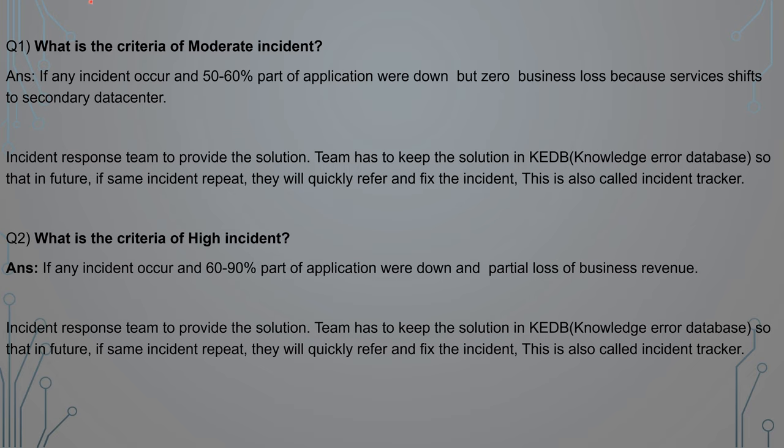Question number two: what is the criteria of a high incident? The moderate and high categories are approximately the same, but the downtime is increased in the high one. If any incident occurs and 60 to 90 percent of the applications are down with partial loss of business revenue — for example, the shifting of services from the primary to the secondary data center takes time, and during that meantime some revenue is lost — such an incident falls under the high category.